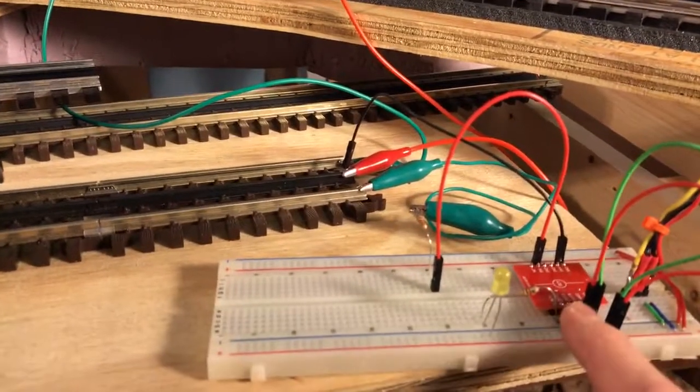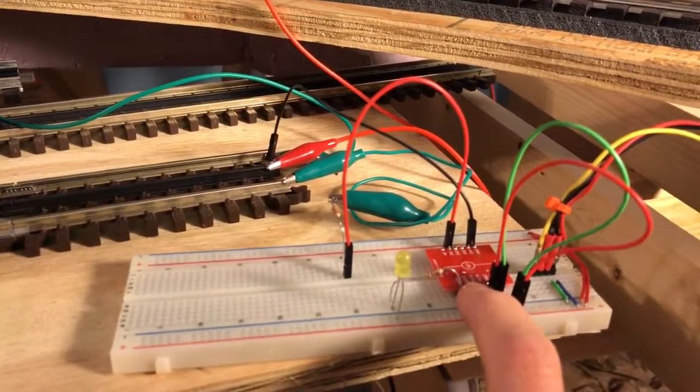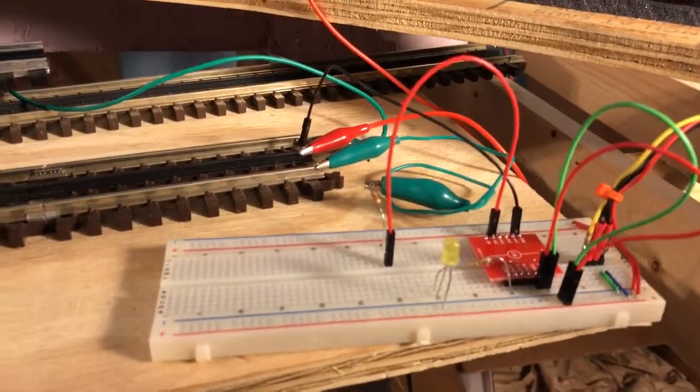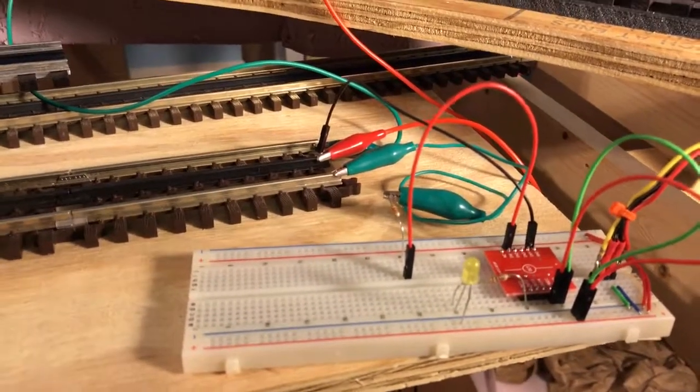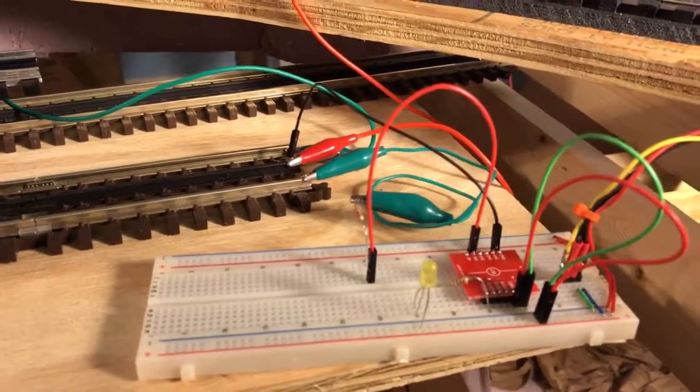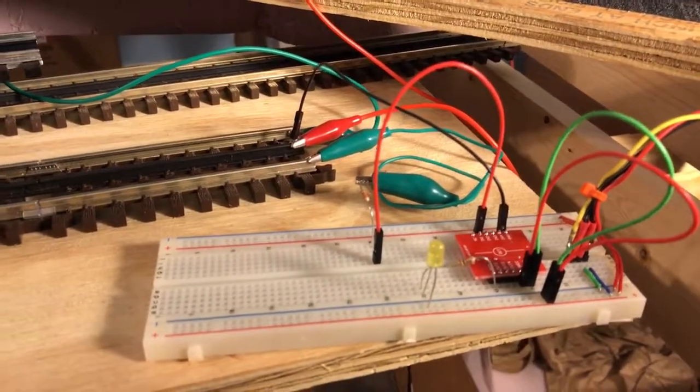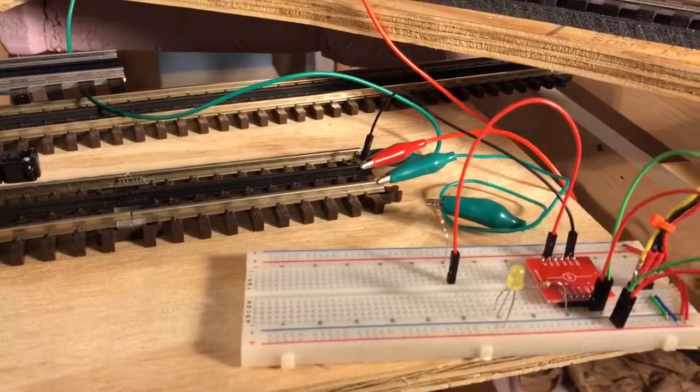I'm pretty pleased with this. The boards are extremely inexpensive on eBay—maybe two dollars per board—and that's four channels of input right there. So it's a pretty economical way to get occupancy detection on the railroad.